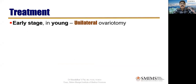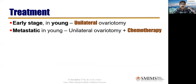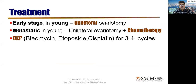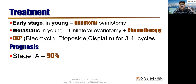Treatment: in early stage young patient, unilateral ovariotomy — exactly what we did for the Malaysian student. Metastatic in young: unilateral ovariotomy plus chemotherapy. BEP — bleomycin, etoposide, cisplatin — 3 to 4 cycles. She refused the fourth cycle as she had very bad fibrosis after the third cycle. Prognosis stage 1A: 90%. She is doing very well in Australia now, has two kids. Overall survival rate: 70%.